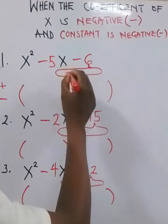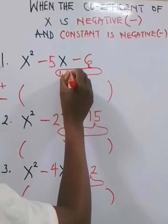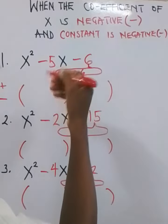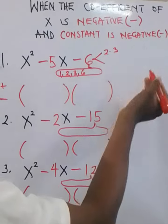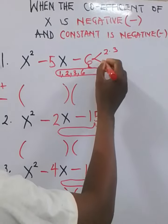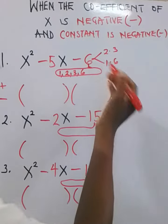Factors of 6, what can go in 6? 1, 2, 3 and 6 itself. So let's pick any of the two factors. If I pick 2 multiplied by 3, it's going to give me 6. If I pick 1 multiplied by 6, it's going to give me 6.